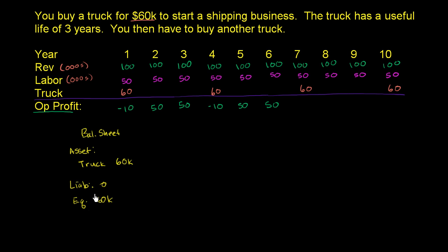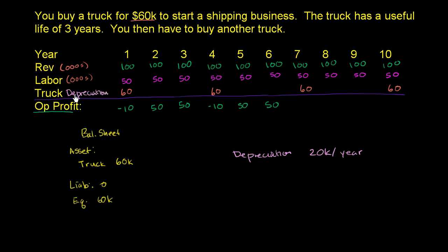The way we account for this truck that lasts three years is we say it has a useful life of three years. Let's just spread that $60,000 out over the three years — or another way to say it, the truck is costing us $20,000 a year. We can depreciate the value of the truck, and that depreciation is an expense — truck depreciation. In the first year, we depreciate our truck by $20,000, meaning one third of its value has been used up, or it's $20,000 worth less at the end of the year. In the second year, $20,000. In the third year, $20,000. We just spread the $60,000 over the life of the truck.